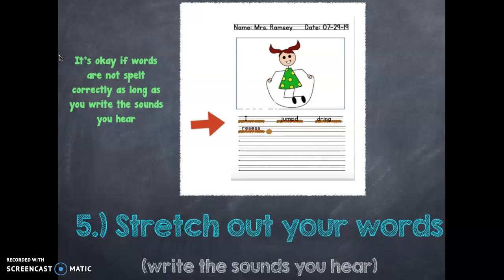And that's okay for a journal entry. Journal entries do not have to be perfect. This is work that you're doing independently, so you don't have to ask the teacher how to spell each word. You want to practice spelling it out phonetically — that means writing the sounds that you hear. I'm going to do the same thing for my next two words, during and recess. On this journal entry, during and recess are not spelled correctly, but that's okay because I stretched them out.